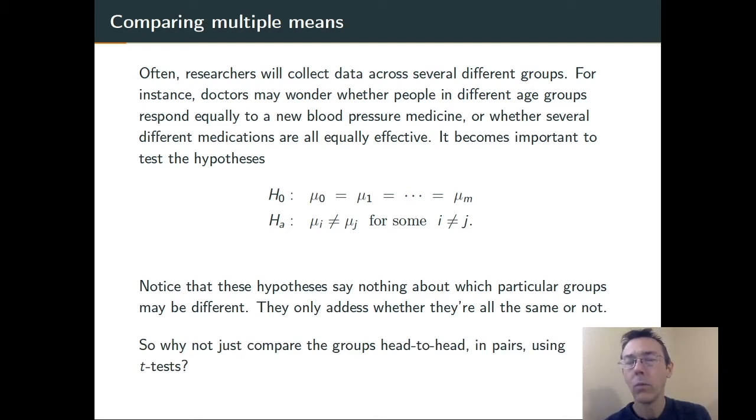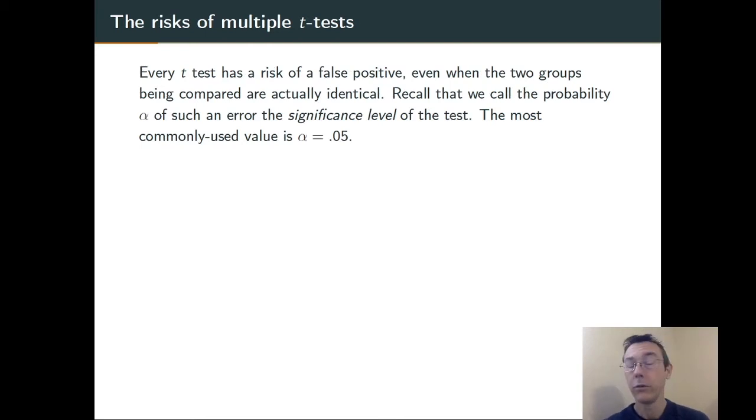Given that that's the case, why should we even bother with analysis of variance? Why shouldn't we just go straight for it and start comparing the groups head-to-head, for example, using paired t-tests or two-sample t-tests? The answer is the risk of false positives. Every t-test that you do, any statistical test you run, is going to have an error rate, a risk of rejecting the null hypothesis even when the null hypothesis is true. We call that the significance level of the test alpha, typically 0.05 is used.